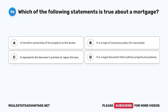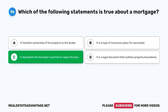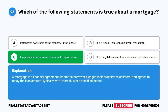Question 96. Which of the following statements is true about a mortgage? A. It transfers ownership of the property to the lender. B. It is a type of insurance policy for real estate. C. It represents the borrower's promise to repay the loan. D. It is a legal document that outlines property boundaries. The correct answer is C. It represents the borrower's promise to repay the loan. A mortgage is a financial agreement where the borrower pledges their property as collateral and agrees to repay the loan amount, typically with interest, over a specified period.